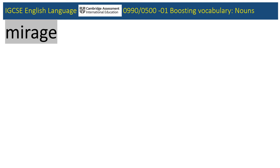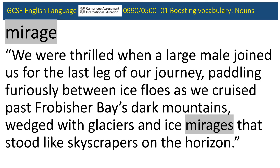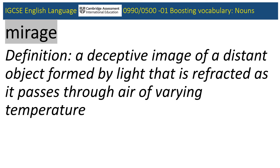Mirage, from the 0990 November 2019 paper — we're back with the adventure cruise in the Canadian Arctic. In a typical CIE sentence packed with imagery, we are the Taurus and a large male is a polar bear. The scenery is beautiful, but what does the writer mean by ice mirages? Define mirage. A mirage is a deception, something that doesn't actually exist — an optical illusion.